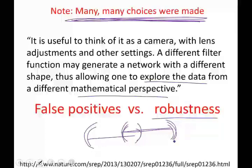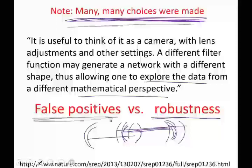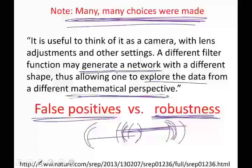If your result is robust, then it's something that probably should be published. But if changing the percent overlap by a little bit or the interval length by a little bit gives a completely different result, that in itself may have meaning and should be explored. So when you have many choices, be careful about false positives and check how robust your results are. On the other hand, being able to generate networks in different ways does allow you to explore the data from a variety of different perspectives.